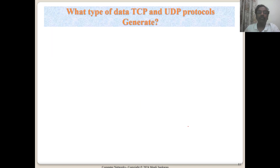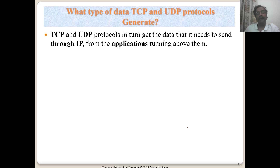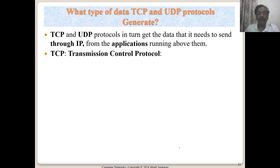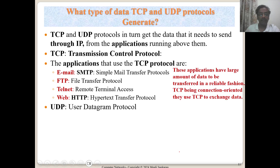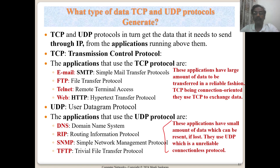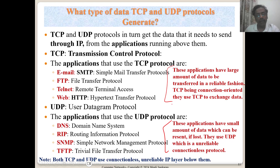UDP carries small amounts of data — bytes or kilobytes — whereas TCP carries large data streams like video, potentially gigabytes. IP therefore needs to support both small and large payloads. Both TCP and UDP use IP underneath, so IP must handle both connection-oriented and connectionless protocols, while being itself a connectionless, best-effort protocol.